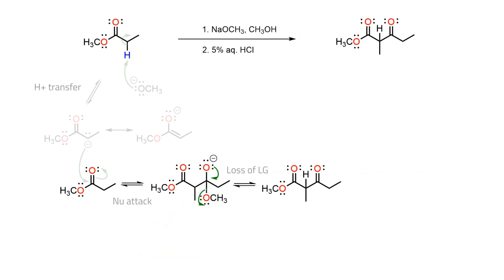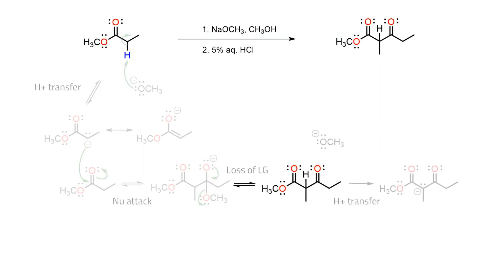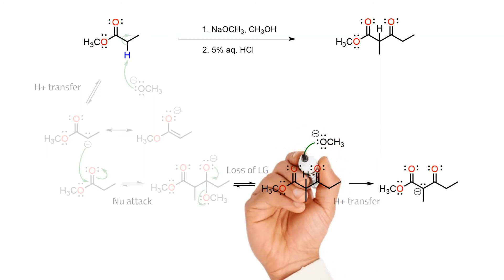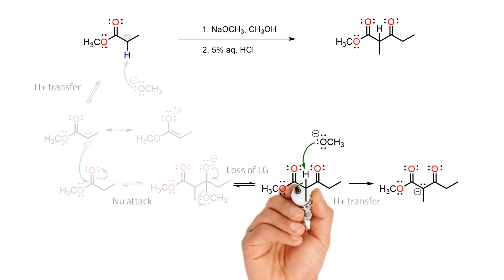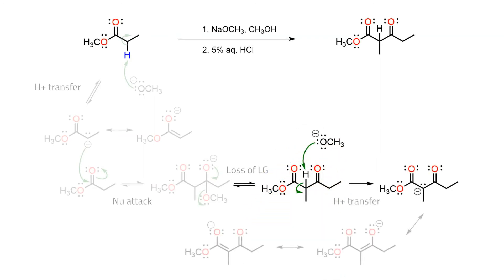However, this is not the end of the reaction. Since the flanking carbonyls make the alpha protons have a pKa of around 13, a molecule of base will deprotonate in a fast reaction to give the resonance-stabilised conjugate base. This is then the formal product of the first reaction.